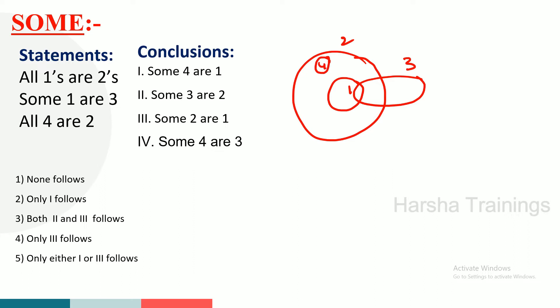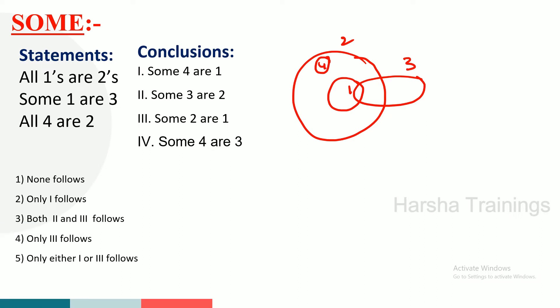So, coming to the conclusion — the diagram is complete. The conclusion is going to be checked. We need to determine whether each conclusion follows or won't follow. Make sure the conclusions are marked follow or won't follow.